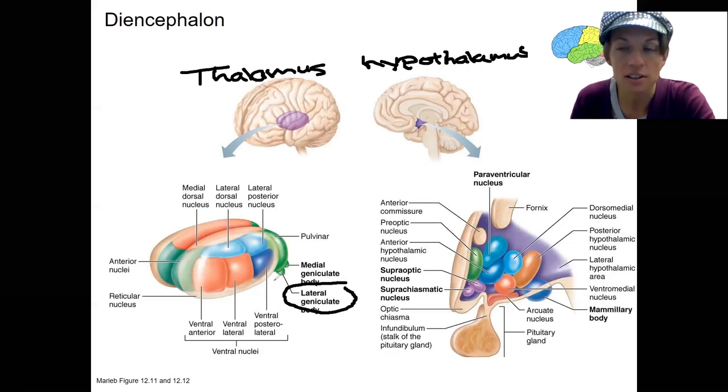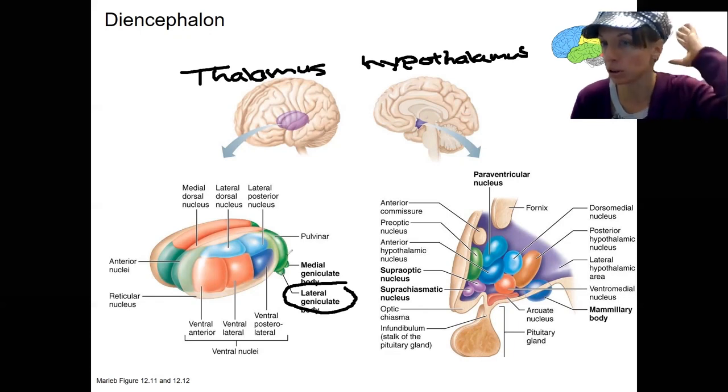This contains neurons that receive information from your visual fields, from your eyes, and then transmit that information off to the occipital lobe where your visual cortex is.